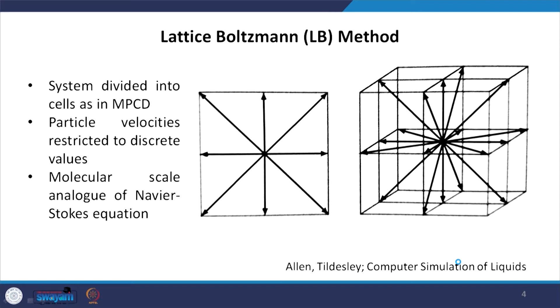Another method along similar lines but slightly more elaborate and gaining pace in recent years is the lattice Boltzmann scheme. In this case the system is again divided into cells, but now particle velocities are restricted to discrete values — a particle can only move in certain directions represented by lattice vectors. It turns out that the lattice Boltzmann scheme is analogous to the Navier-Stokes scheme at the molecular scale.